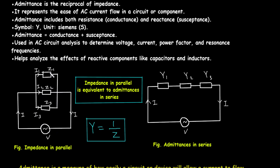Here we can see Z1, Z2, and Z3 — these are impedances connected in parallel. Impedances in parallel are equivalent to admittances in series. In the equivalent circuit, Y1 represents 1/Z1, Y2 represents 1/Z2, and Y3 represents 1/Z3. So impedances in parallel correspond to admittances in series.